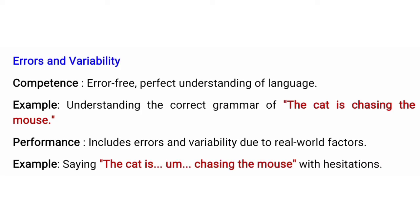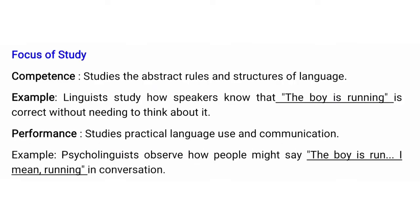On the basis of errors and variability we can differentiate between competence and performance. Competence is error-free: for example, understanding the correct grammar of 'the cat is chasing the mouse.' Performance includes errors and variability due to real-life factors — for example, saying 'the cat is chasing the mouse' with hesitation or speech errors. Competence studies abstract rules and structures of language, like knowing that 'the boy is running' is correct without needing to think about it.